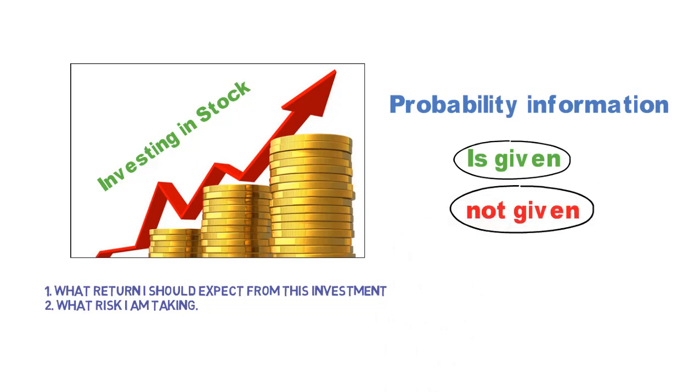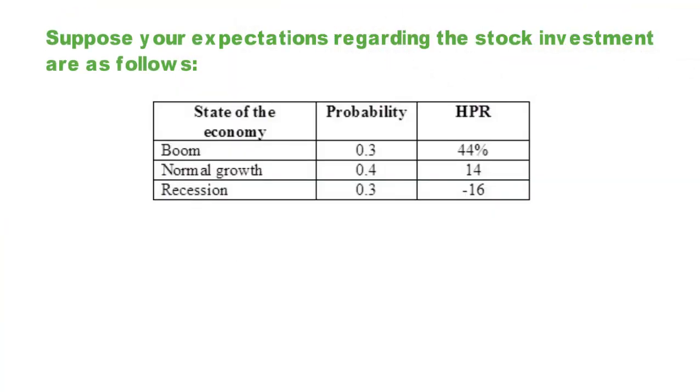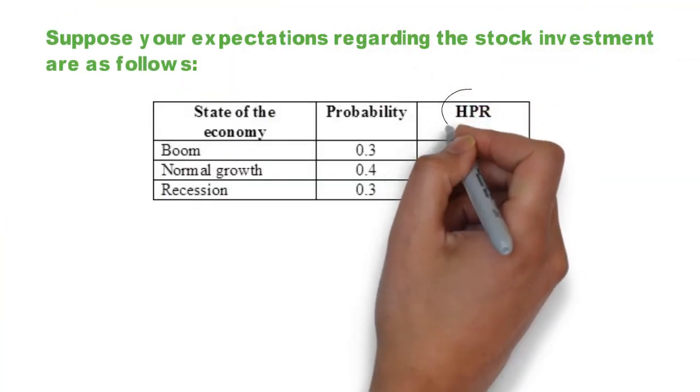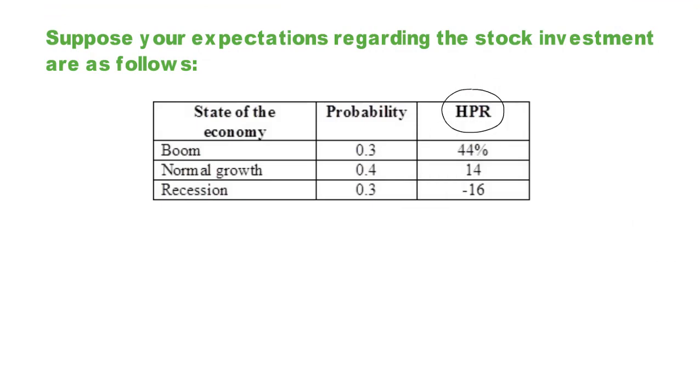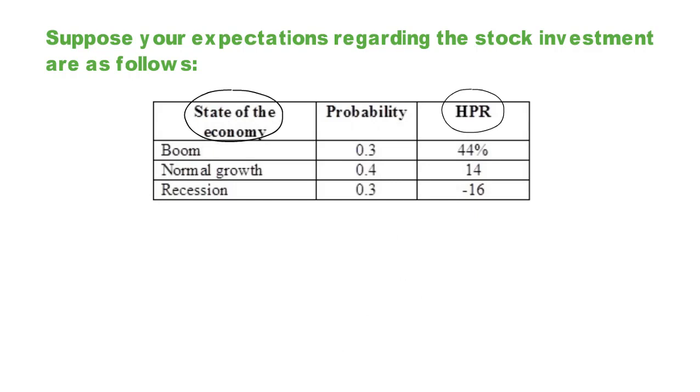Here's the probability example. As you can see, your holding period return, which is denoted as HPR, varies based on overall state of the economy, such as best case scenario, normal state, or worst case scenario. You also know the probability of making these different returns in different scenarios.